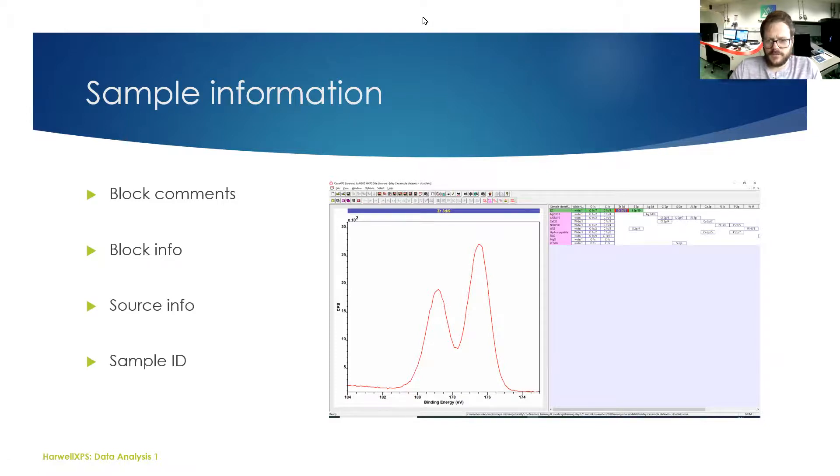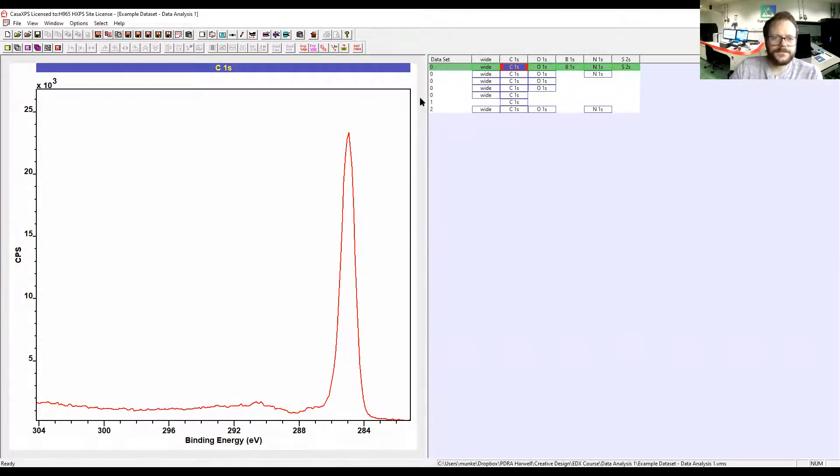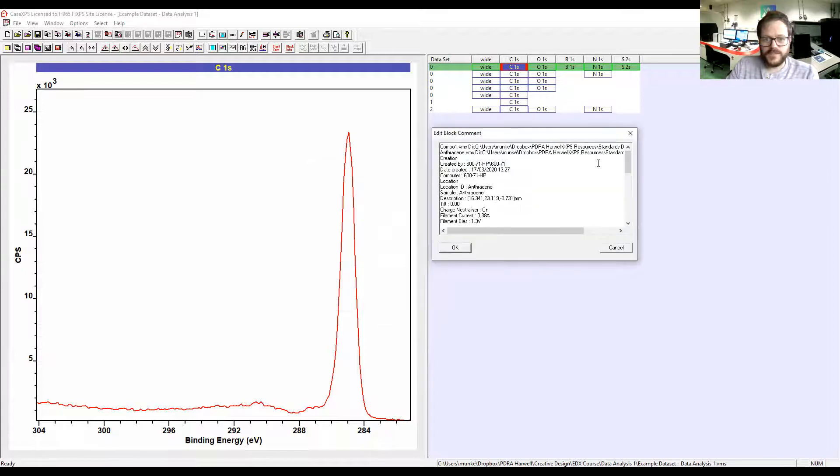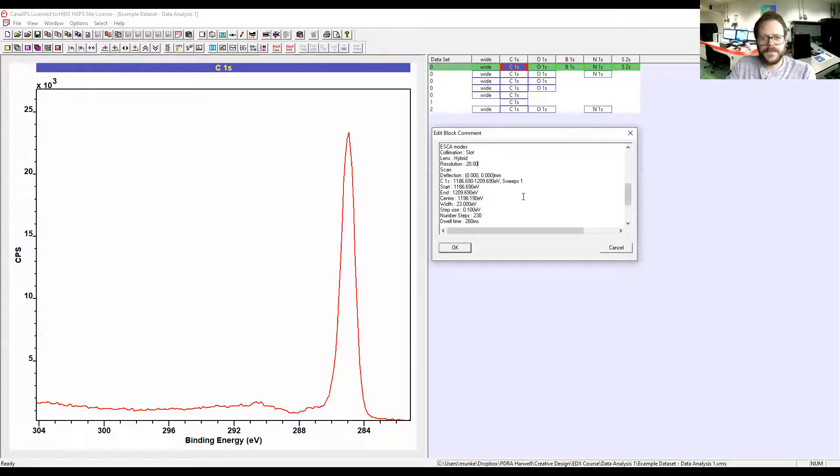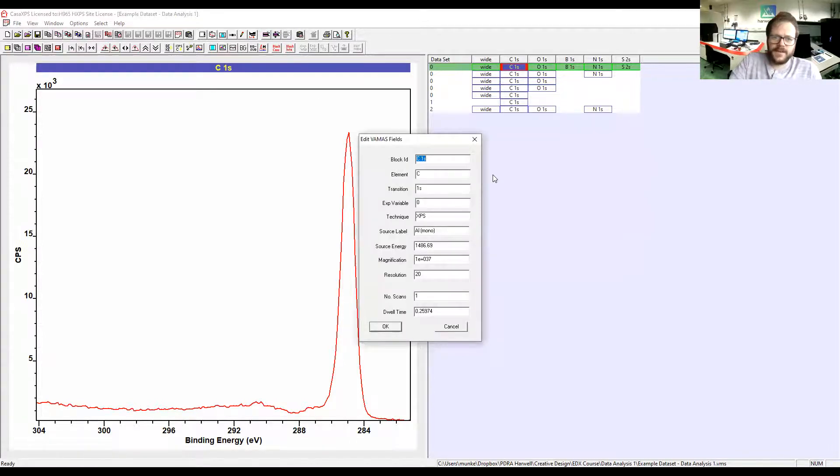I'm just going to switch to our software now. Here we're just going to click on the spectra to open up these options. First I'm going to open up the comments. The comments has got all kinds of information that you could possibly want. If we look down here we have the sample name, we've even got the stage coordinates it was recorded at, the neutralizer settings, our emission current, the pass energy, the dwell time, and the number of sweeps. In Block Info, it's in a slightly tidier table fashion, and again you've got all of this information available.